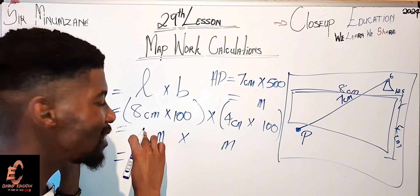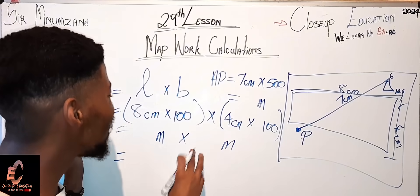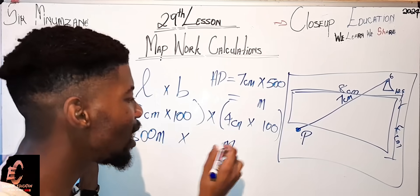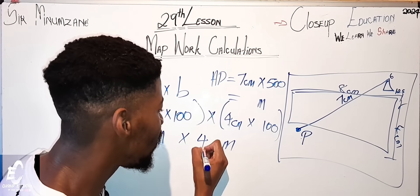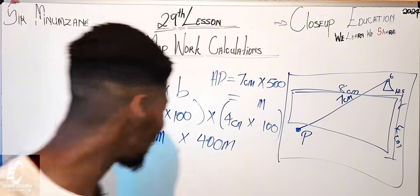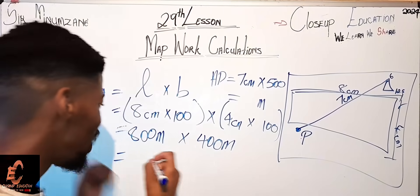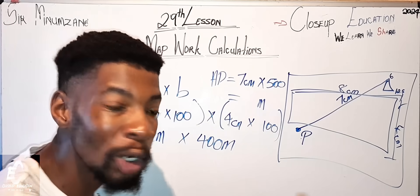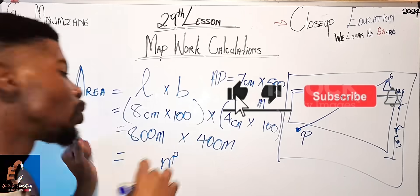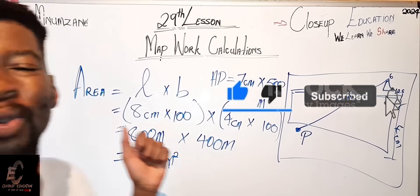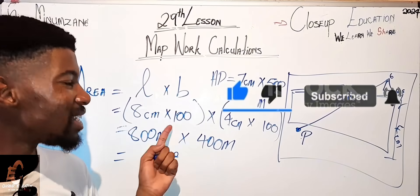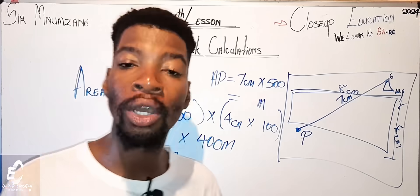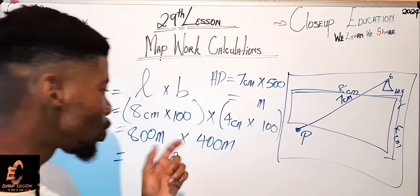Eight times 100 gives 800 meters, and four times 100 gives 400 meters. So the answer is 800 meters times 400 meters, which gives you meters squared. This is how you calculate area correctly. Convert at the beginning — do not convert at the end. This is geography, not math.